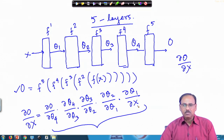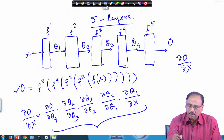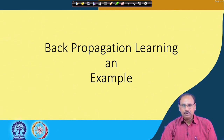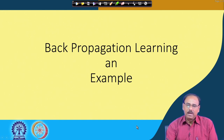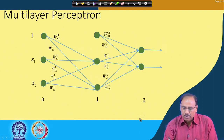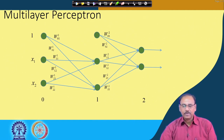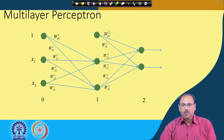In the back propagation learning algorithm we make use of these properties of partial derivatives. We will now explain the back propagation algorithm with an example at the network layer level, considering the neural network as a whole. For this example I consider a two-layer MLP with one hidden layer, one output layer having two output nodes, and one input layer.